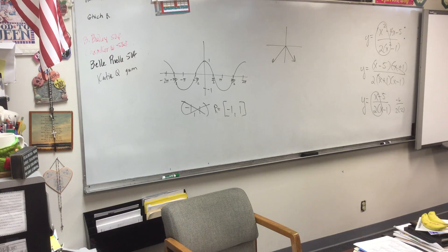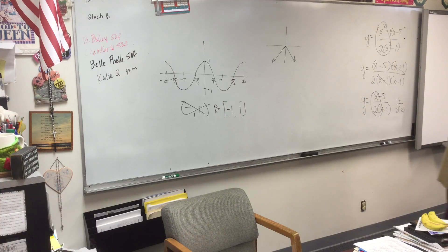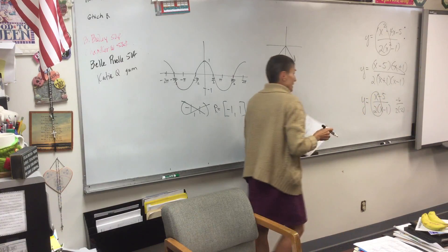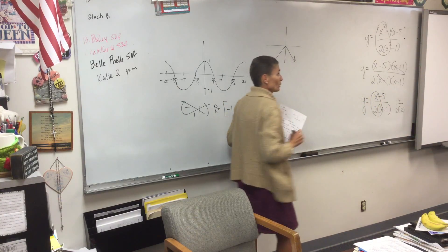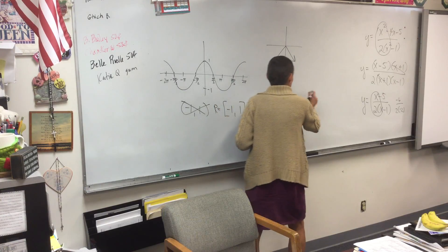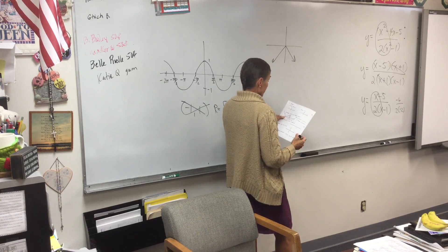Everybody okay with that vocabulary? Zeros, X intercepts. What are the intervals on which this is increasing? Now, remember, I'm talking about drawing it left to right. Where is my pencil going up? And I'm going left to right, so I'm looking at X values. Which X values, as I go left to right, is my pencil going up?